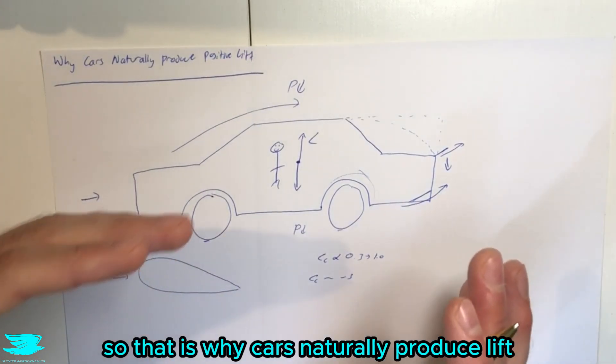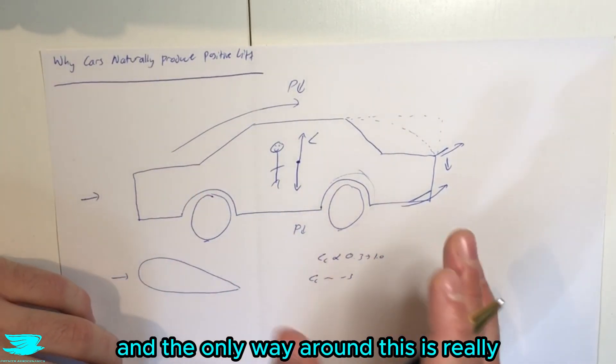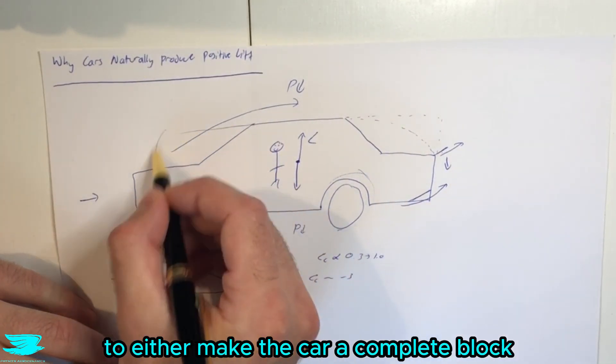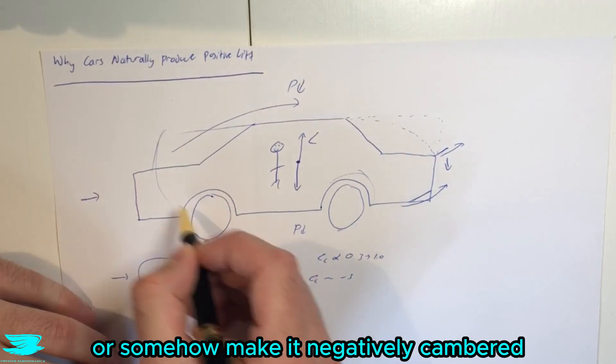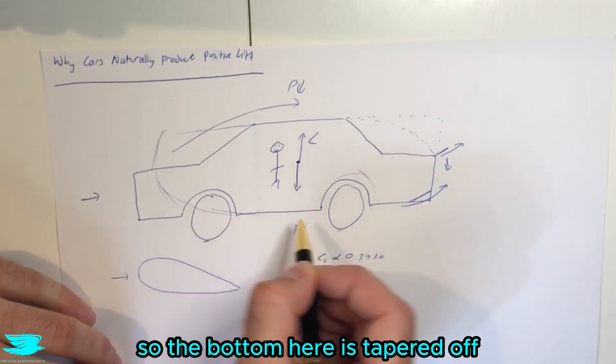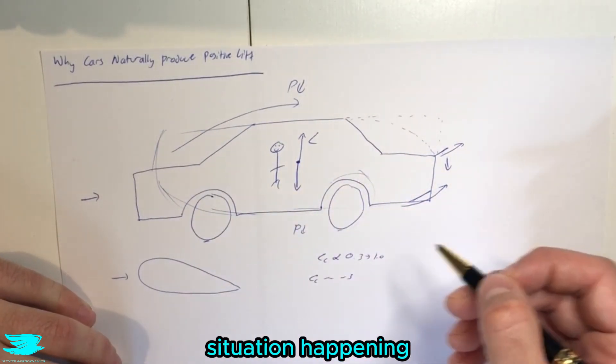So that is why cars naturally produce lift. And the only way around this is really to either make the car a complete block, or somehow make it negatively cambered. So the bottom here is tapered off. So we get an inverse wing kind of situation happening.